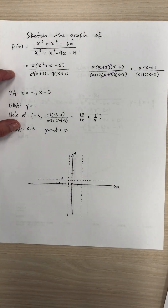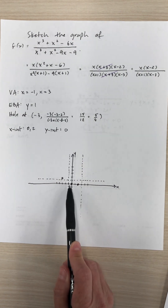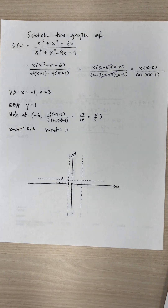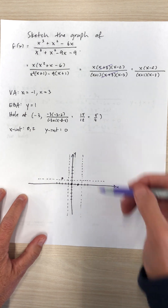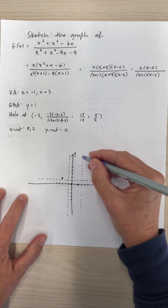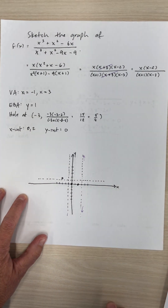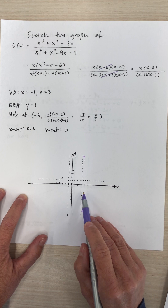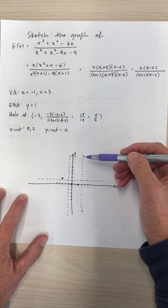Here I have plotted all the major information: the hole at (negative 3, 1.25), the vertical asymptotes at x equals negative 1 and x equals 3, and the horizontal asymptote y equals 1. Starting at the right part of the graph, because this is a vertical asymptote, the behavior either goes up or down. Whichever it is needs to connect so that it follows the horizontal asymptote as x goes to infinity.